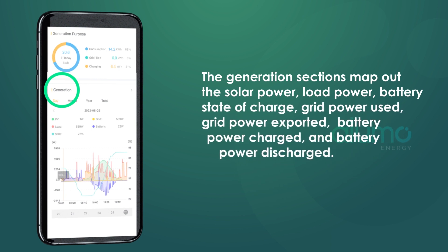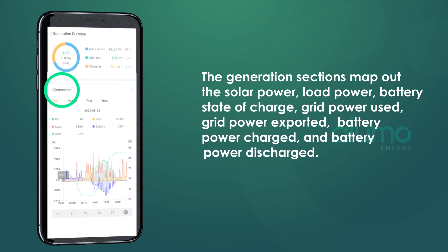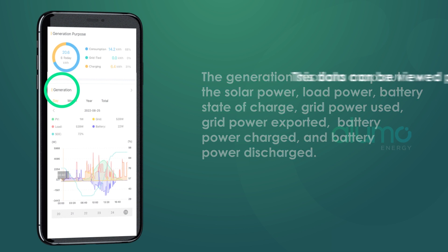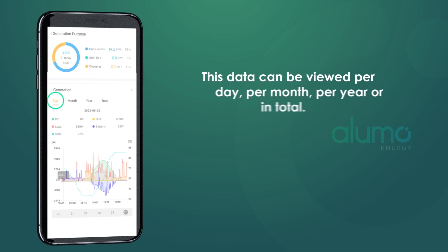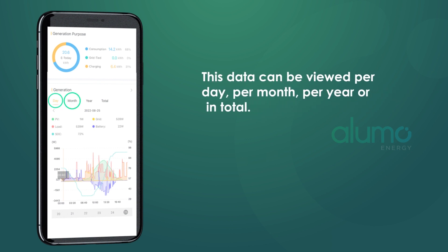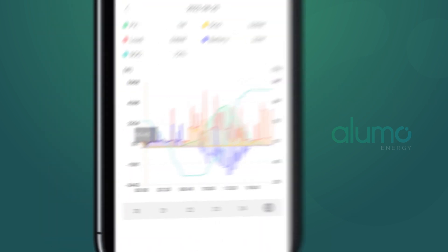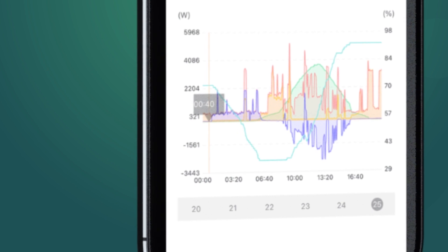The Generation section maps out the solar power, load power, battery state of charge, grid power used, grid power exported, battery power charged, and battery power discharged during the course of the day. This data can be viewed per day, per month, per year, or in total.